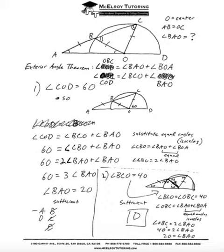And then we know that this 40 degrees by the exterior angle theorem is equal to this angle plus this angle. Since these two angles are equal, we can say that 2 times angle BAO is equal to 40 degrees. And so BAO is equal to 20.